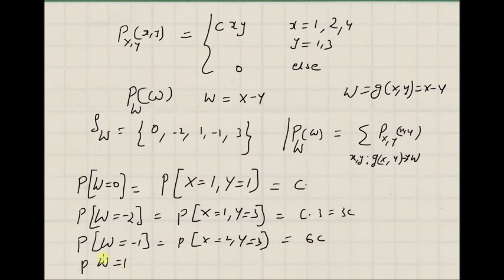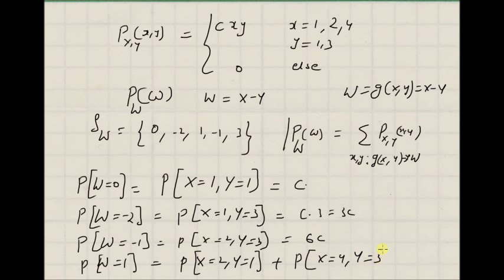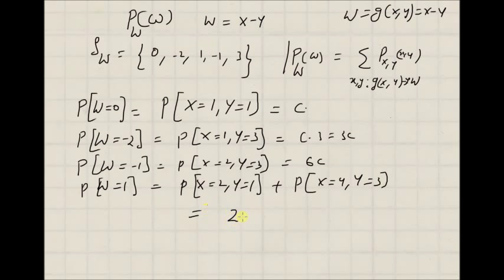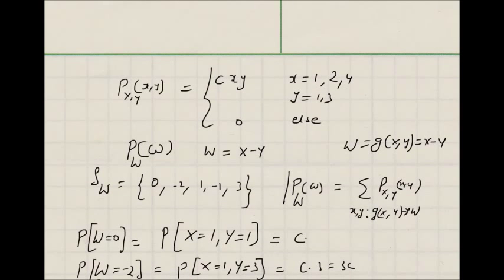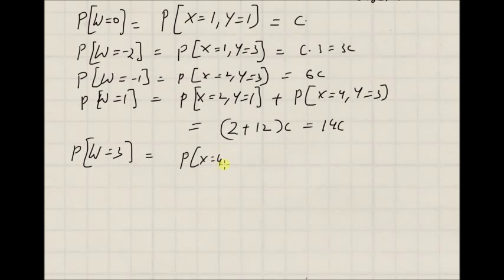And the next one is w equal to 1. For w equal to 1, we see that there are two combinations that map to w equal to 1, that is (2, 1) and (4, 3). So the probability of w equal to 1 should be equal to probability of x equal to 2, y equal to 1, plus probability of x equal to 4, y equal to 3. Since these two combinations lead to w equal to 1, we have probability of w equal to 1 equal to the summation of these two probabilities, which is 2 plus 12 times c, that is 14c. And finally, for w equal to 3, we have only one combination, that is x equal to 4 and y equal to 1, giving probability of x equal to 4, y equal to 1, which is 4 times 1 times c, that is 4c.